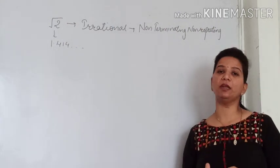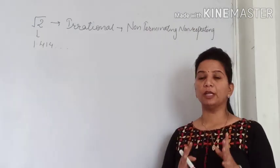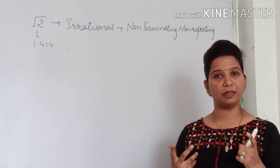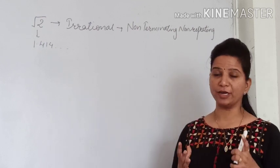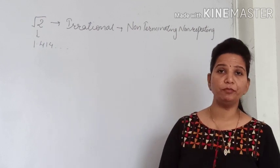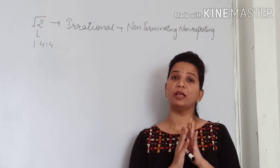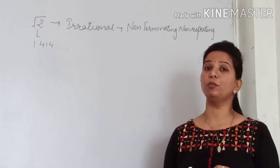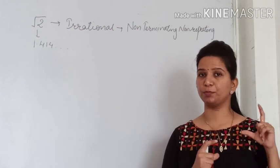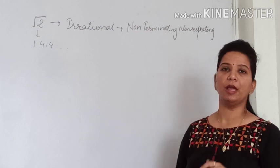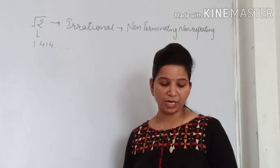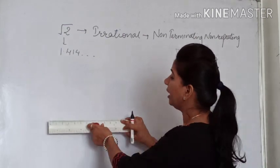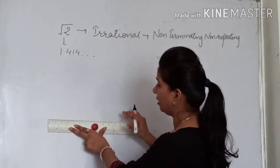So we will represent this on the number line. Now to represent this on the number line, we must have the knowledge of Pythagoras theorem. What is Pythagoras theorem? That in a right triangle, the square of the hypotenuse is always equal to the sum of the squares of its perpendicular and base. So we will use this logic.